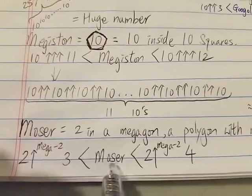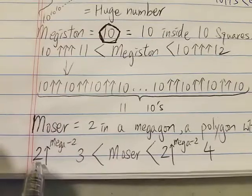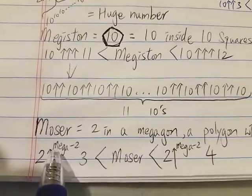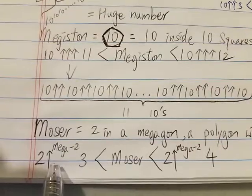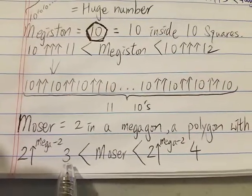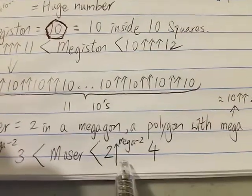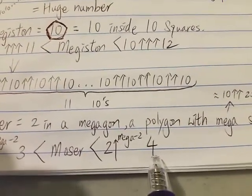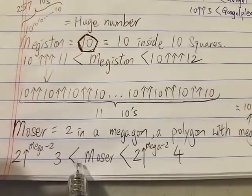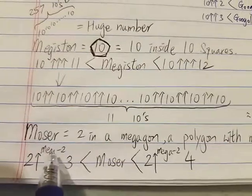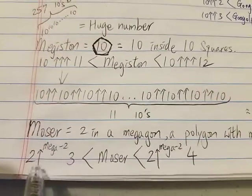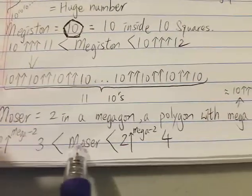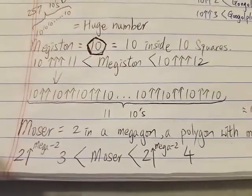Remember, Mega is approximately 10 two-arrow 257 — a huge number. A Megagon has that many sides. A pentagon only has 5 sides and 2 in a pentagon is Mega, but the Moser is 2 in a Megagon with this many sides. So immediately we know the Moser is going to be much, much bigger than both Mega and Megiston.